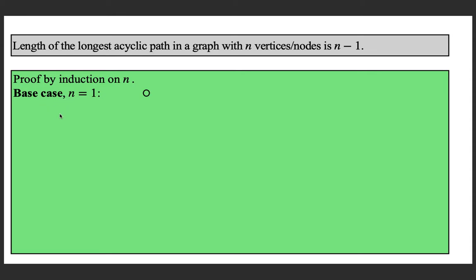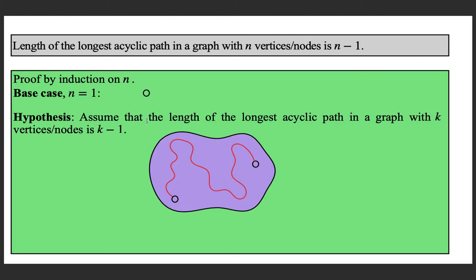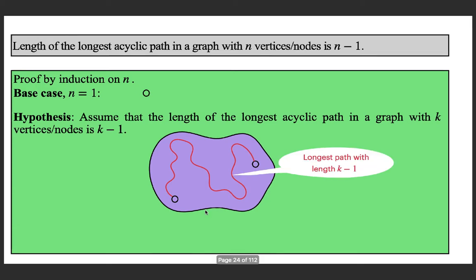The next step is the induction hypothesis. Assume that the length of the longest acyclic path in a graph with k vertices or nodes is k minus 1. This statement is assumed when n equals k. If there are k vertices, we assume the length of the longest path is k minus 1. Here is a graph with k vertices and the longest path, with k minus 1 edges in it.